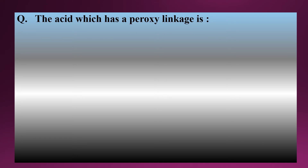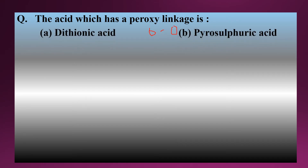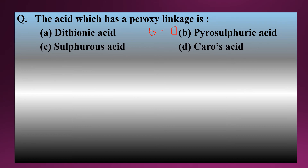The next question is: which acid has a peroxy linkage? Peroxy linkage means a linkage between two oxygen atoms — O–O. As discussed in a previous video on oxo acids of sulfur, the options are dithionic acid, pyrosulfuric acid, sulfurous acid, and Caro's acid. The correct answer is Caro's acid, H2SO5, where there is an O–O linkage between two oxygen atoms, and that linkage is known as the peroxy linkage.